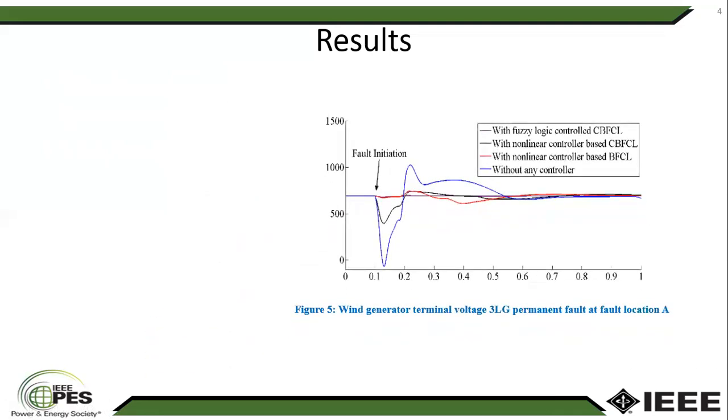For the wind generator, we also checked different dynamic responses. From one of the responses, the terminal voltage of the wind generator, if any three phase to ground fault happens in a specific location of the system, with the presence of our fuzzy logic control CBFCL the wind generator voltage remains stable, whereas the voltage gets a lot of dip in the situation of other operations.